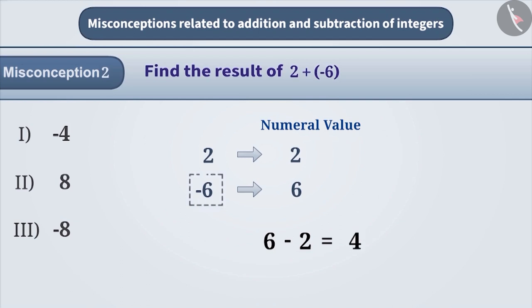Later, the sign of the larger number is included in the result. By doing so, we get the correct answer, option 1, that is, minus 4.